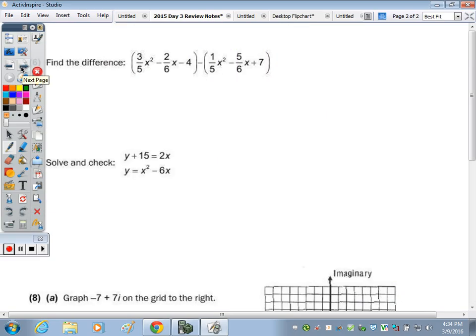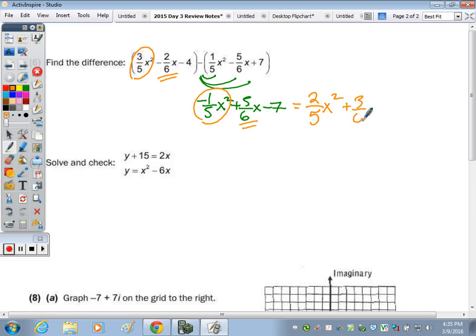On the back side, find the difference. So I'm going to distribute the negative and combine like terms. So minus 1 fifth x squared plus 5 sixths x minus 7. So I combine the x squared with this x squared term. 3 fifths and a negative 1 fifth is 2 fifths. The x's, negative 2 sixths plus 5 sixths is 3 sixths. And then negative 4 minus 7 is negative 11. I just need to reduce this, and we're done. 3 sixths reduces to 1 half.